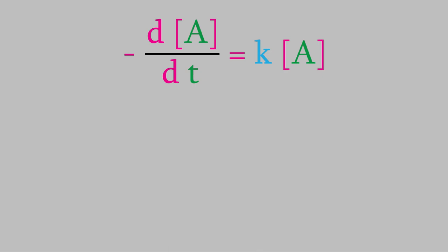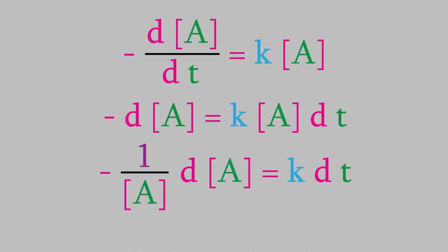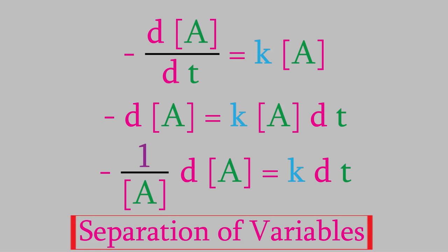Our next step is to get the concentration and time on opposite sides of the equal sign. We'll do that by multiplying both sides by dt, so that time is now on the right side of the equation. Next, we'll divide both sides by the concentration of A, so all the terms with concentration are on the left, and all the terms with time are on the right. What we just did is a technique called separation of variables. It's a very common method used in mathematics, physics, and chemistry when we have an equation with more than one variable and we want to find out how the variables affect each other. We'll perform separation of variables on quite a few different equations during this course, so it's a good technique to have in your toolkit.